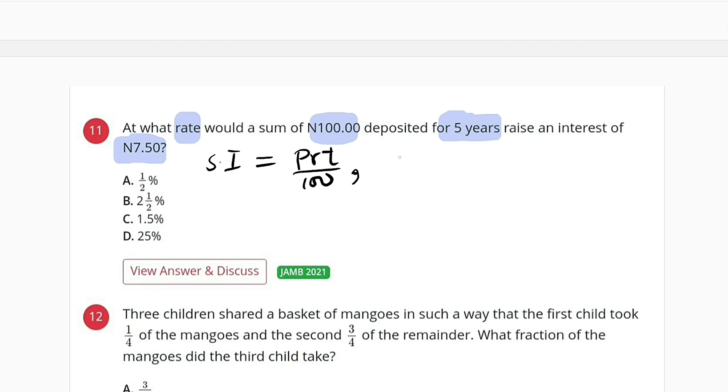We have simple interest 7.5. This equals the principal amount which is 100, multiplied by the rate which we are asked to find R, times time which is five years, divided by 100.